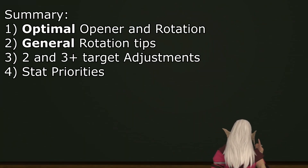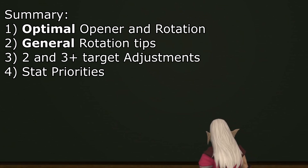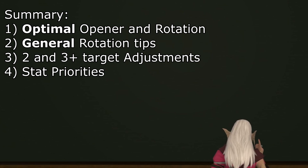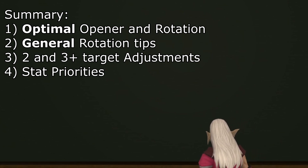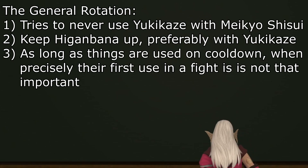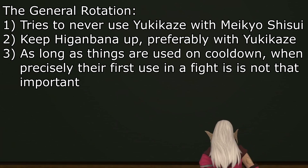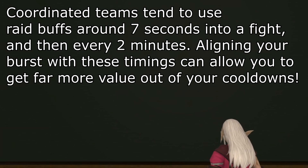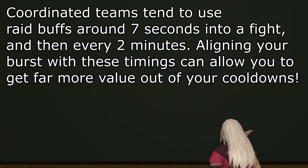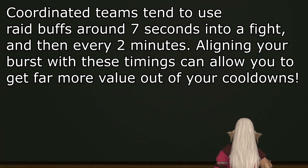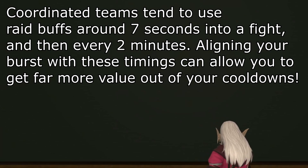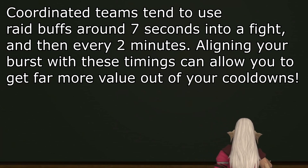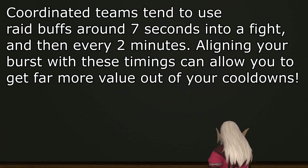To round off, let's talk about an optimized opener and rotation, followed by general rotation tips, and then stat priorities. As Samurai explicitly has no damage-boosting cooldowns, the opener we have built throughout this guide functions as the most efficient use of your cooldowns. In a well-coordinated group, you can plan to use every big cooldown in a single short burst window every minute. This is the optimal rotation and can be very difficult to perform perfectly, so it is fine to use the less rigorous opener and rotation from this guide until you feel ready. Here is the strict optimal opener and rotation designed for maximizing damage within predictable raid cooldown windows.